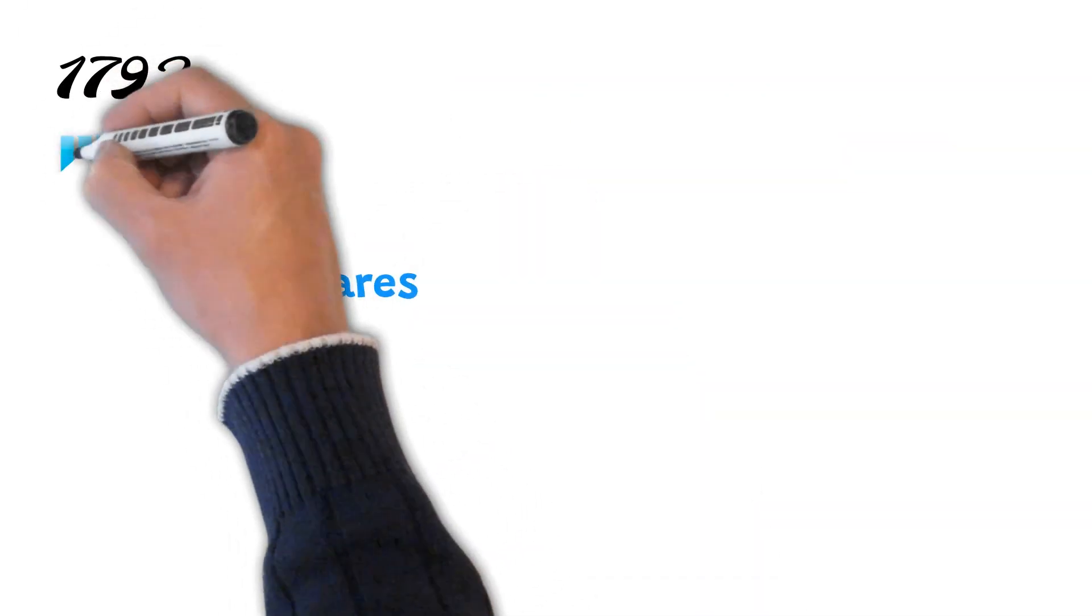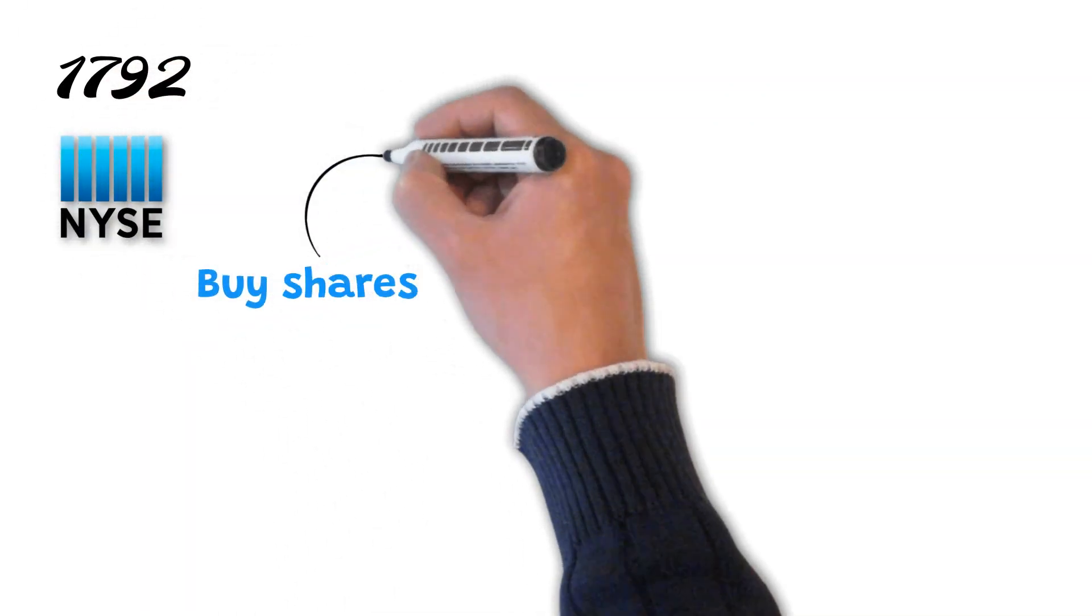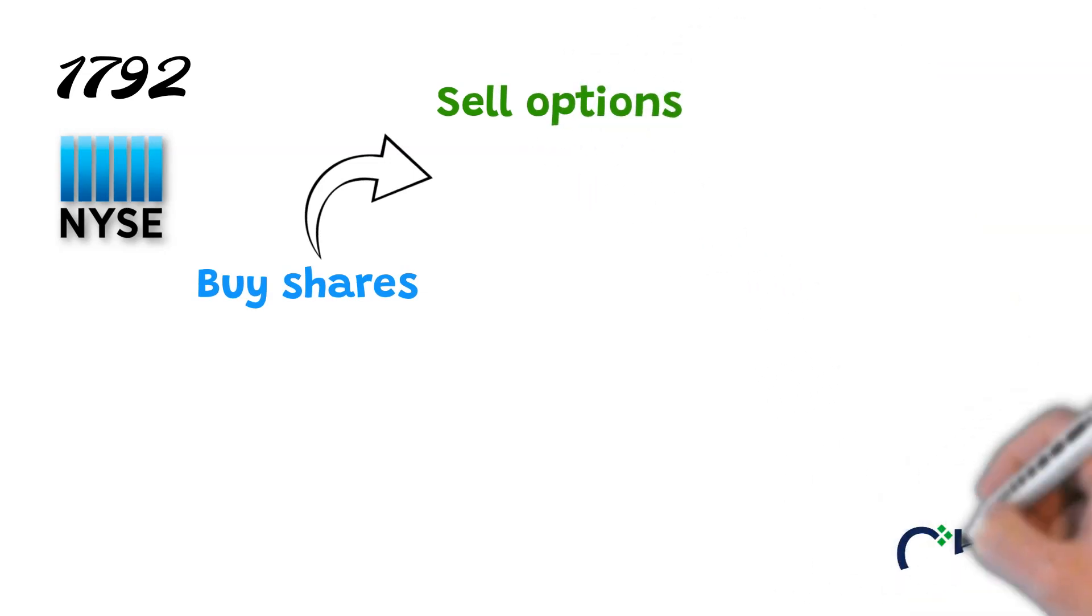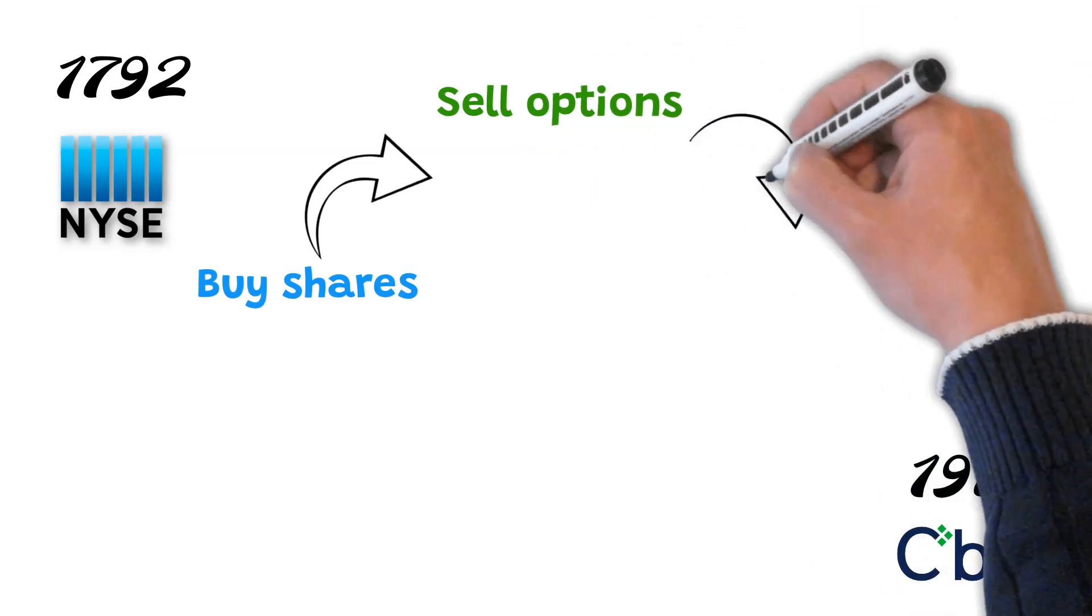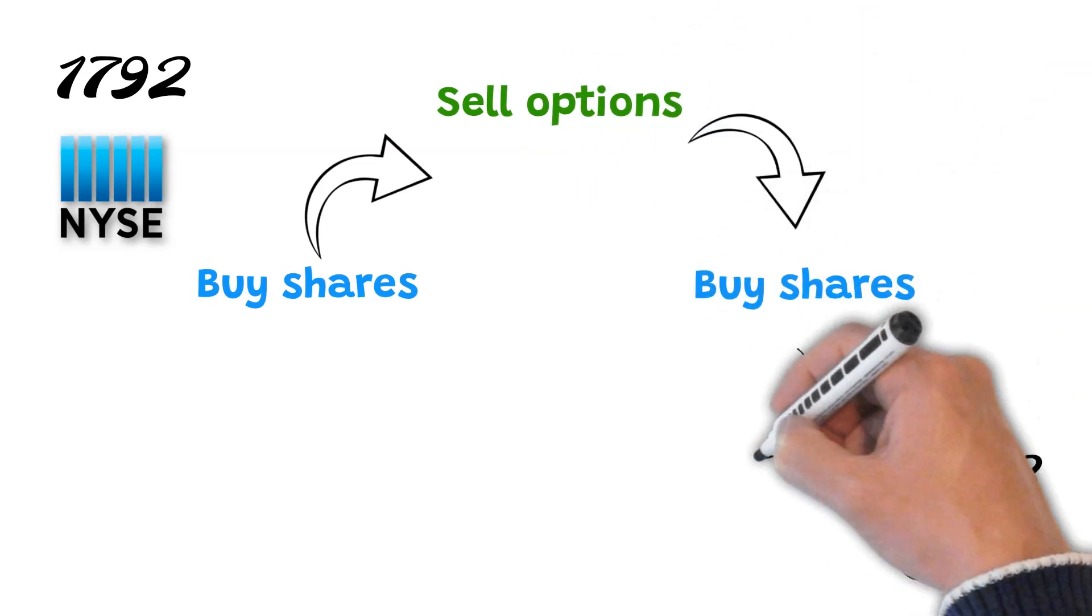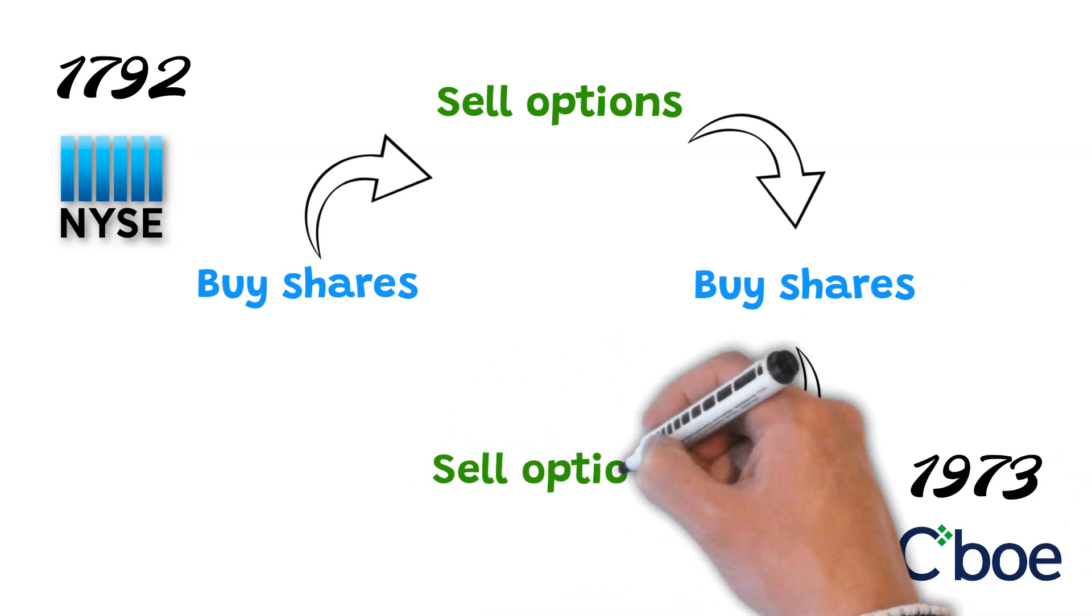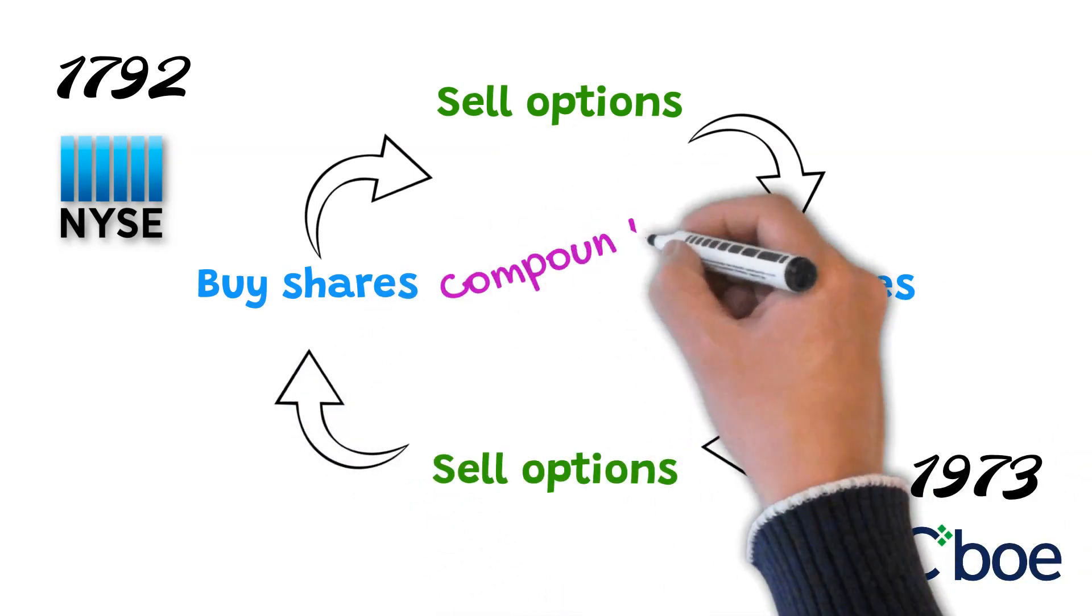Since 1792, we can buy shares in the New York Stock Exchange. With these shares, we can sell call options in the CBOE since 1973, then we choose to buy more shares, out of which we can get more income in an endless loop compounding over time.